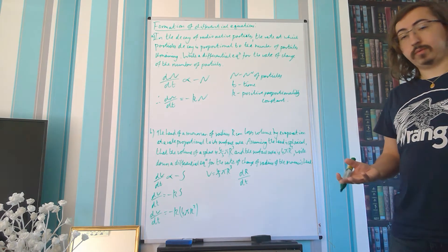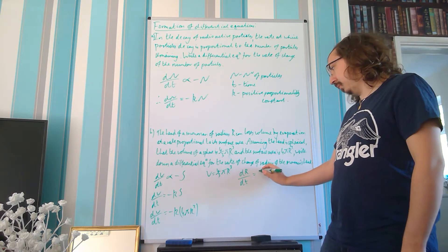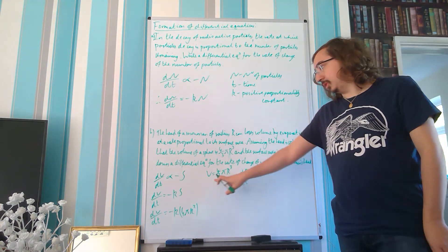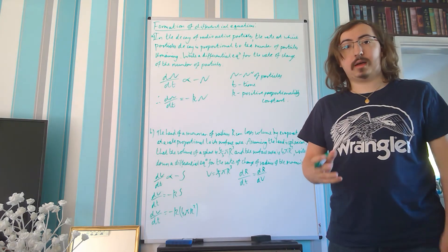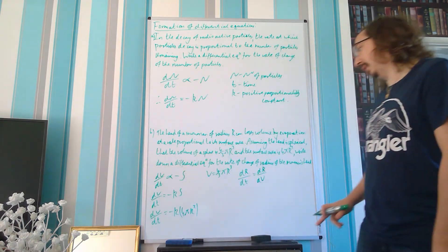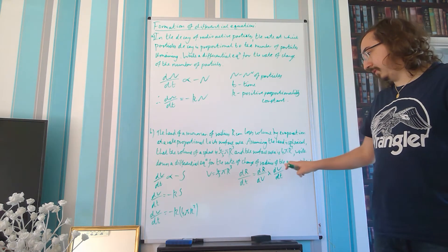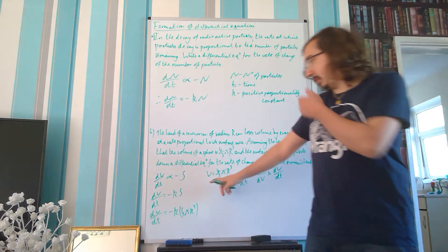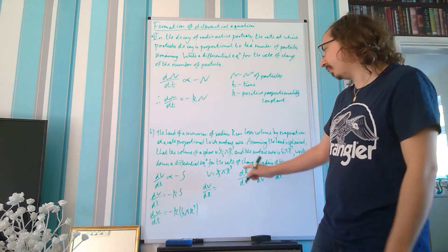We're going to need to use the chain rule here. We want dr in the numerator. Since volume is expressed in terms of r, we can find dV/dr and then take its reciprocal to get dr/dV. We already have an expression for dV/dt, so we multiply dr/dV by dV/dt — the dV's cancel — leaving us with dr/dt, which is what we're looking for.